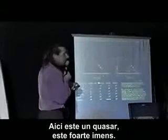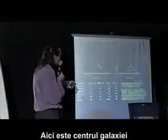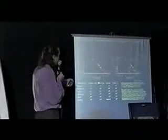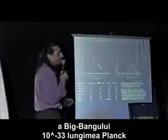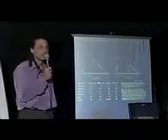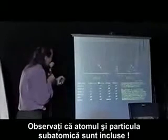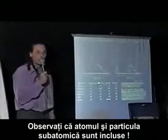Everything inside that black hole is smaller black holes. But these smaller black holes you are outside of. This is a quasar, very large. This is a galactic center. This is our sun. This is an atom. And this is a subatomic particle — the Big Bang — 10 to the minus 33, the Planck length. Note that the atom and subatomic particle are included.